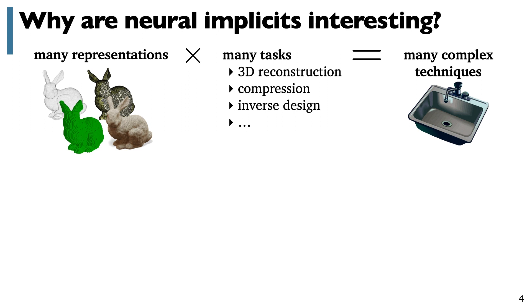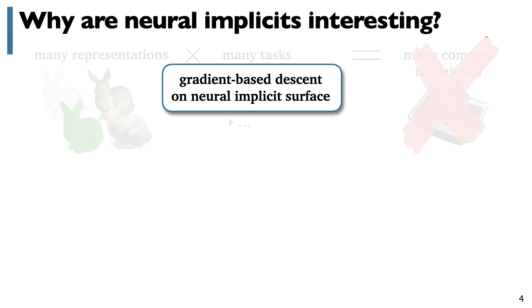These neural implicit representations are exciting, because for many of these tasks they end up just being simple gradient-based descent on the weights of the neural network, and this is really appealing. This works so well that it's useful and being widely applied, even in cases where there's not really any machine learning going on per se, we just use this neural network as a function space to solve a single problem of interest.